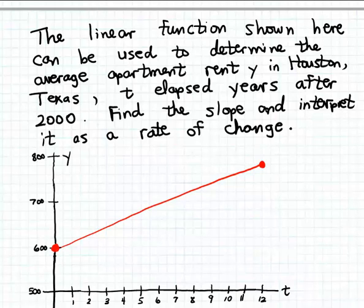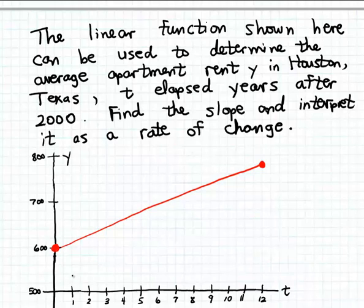In this example we're shown a linear function whose purpose is to determine the average apartment rent in the city of Houston, Texas. We're calling this value y. A certain number of elapsed years after 2000 is the input quantity, which we're calling t. The output quantity is the average apartment rent in the city of Houston.